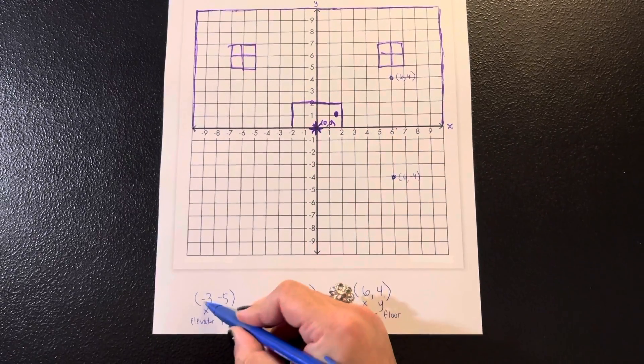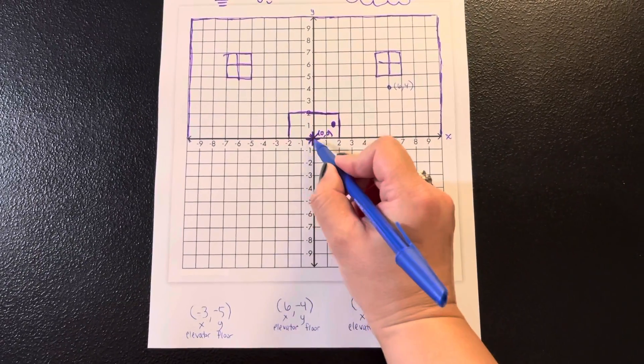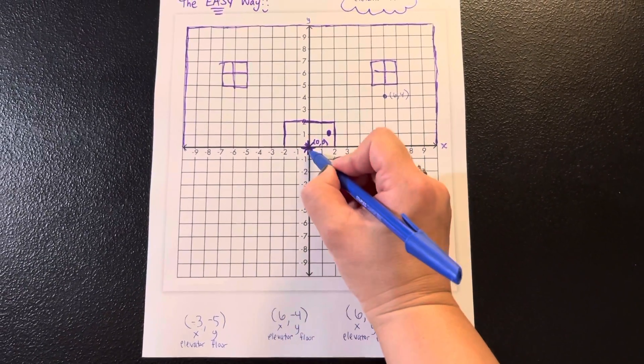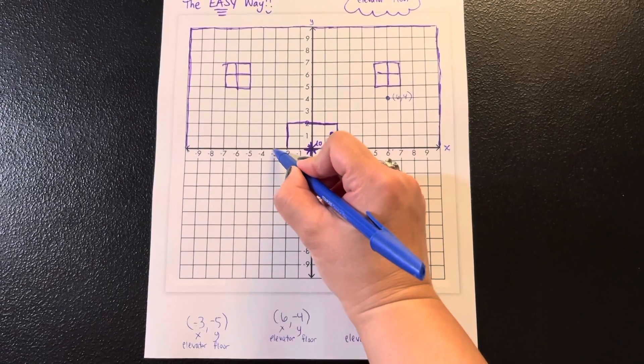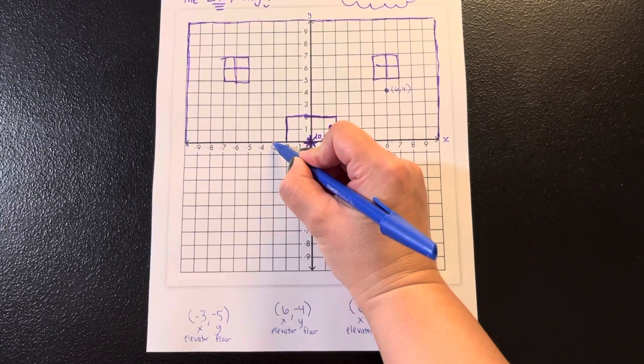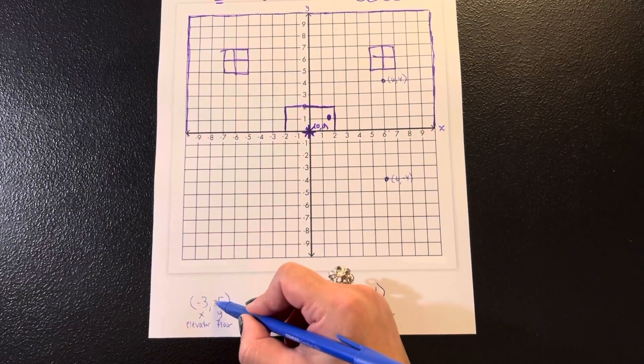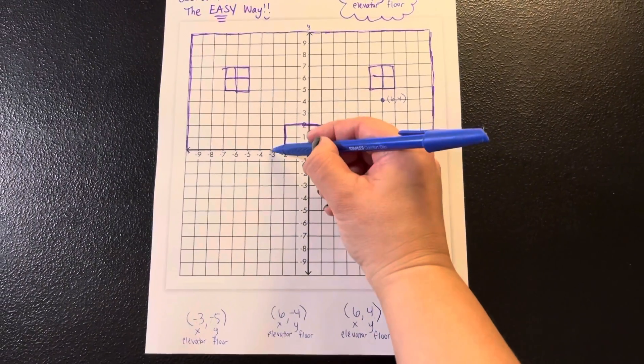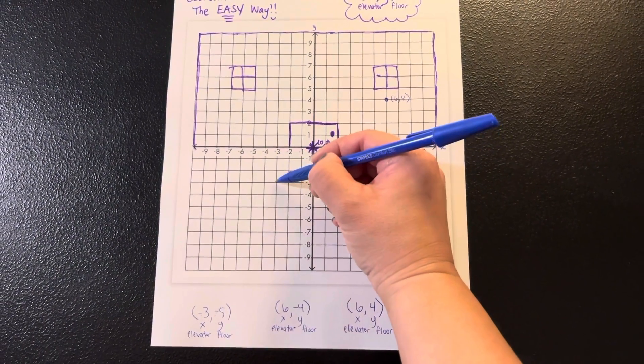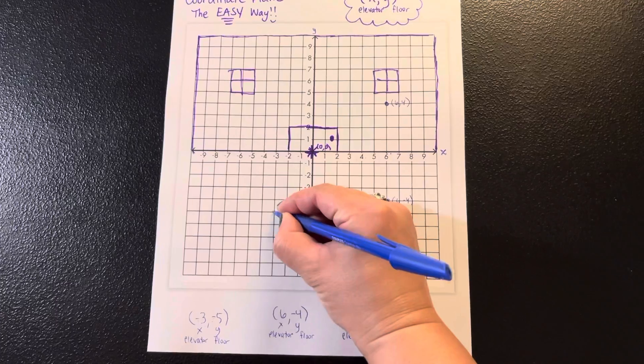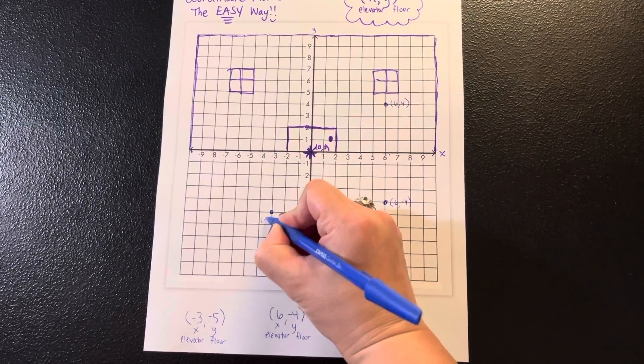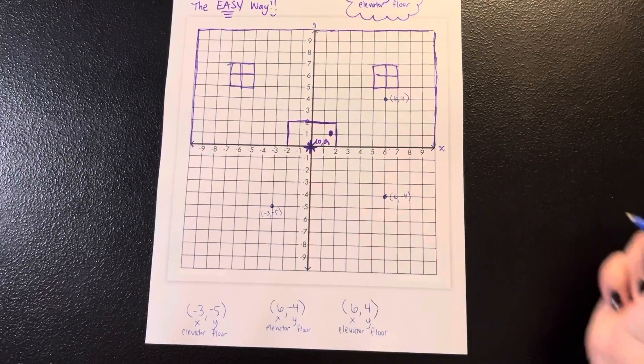This time I'm looking for elevator negative three. So I know I'm not going to go right. Those are positives. So I'm going to go left to negative three. And then my floor tells me to go downstairs to five. Downstairs meaning negative. So negative three, one, two, three, four, five. Downstairs to floor five or negative five.